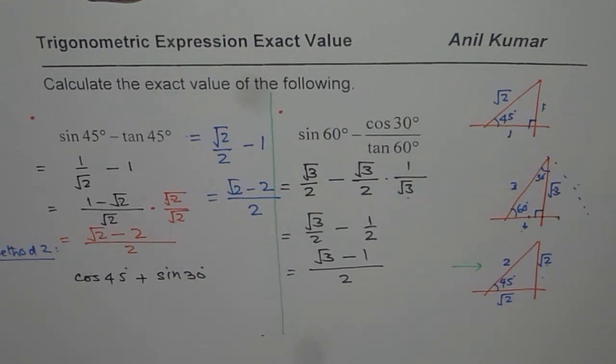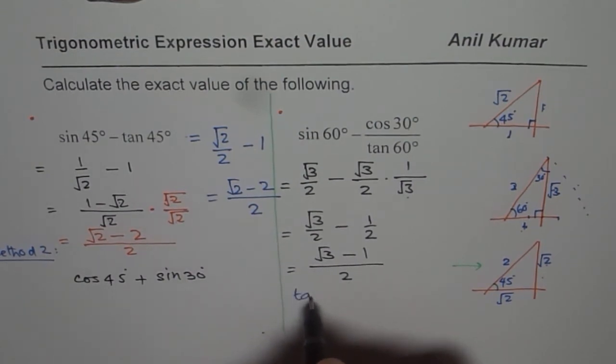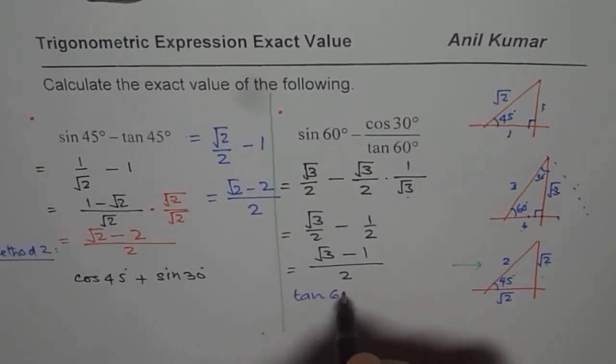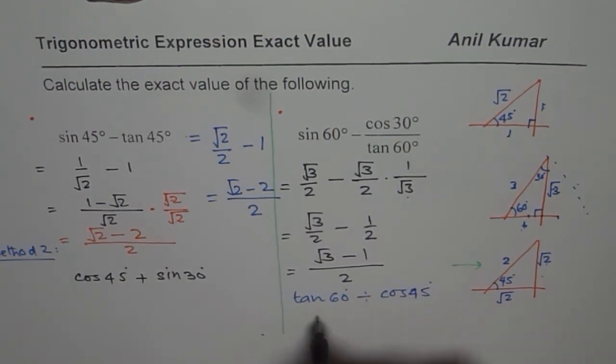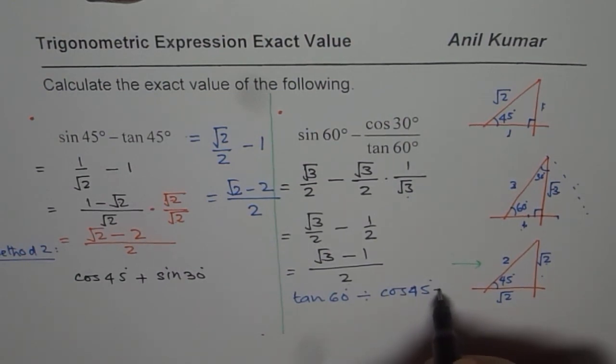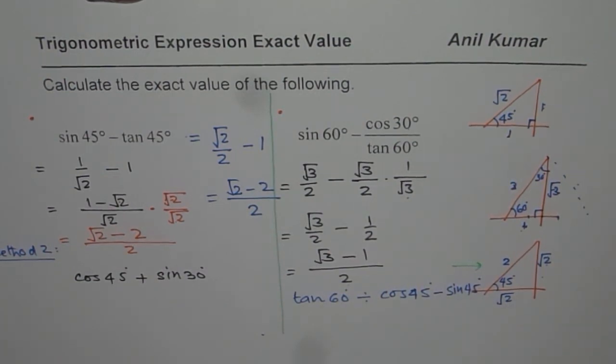So that is how you can actually get the exact values. As a practice question, let me give you here a question to you. And that will be tan of 60 degrees divided by cosine of 45 degrees, let us say, right? So try to do this minus sine 45. Okay, so I just added a few more terms. So you can take that as a practice question. I hope that helps. Thank you and all the best.